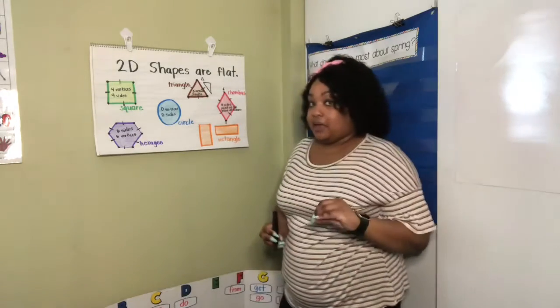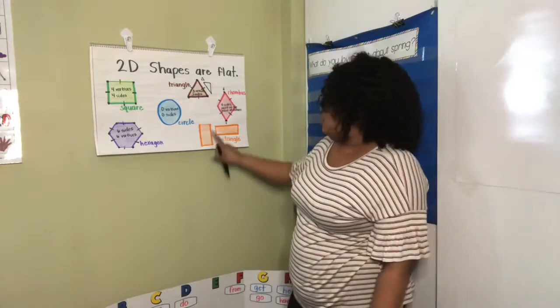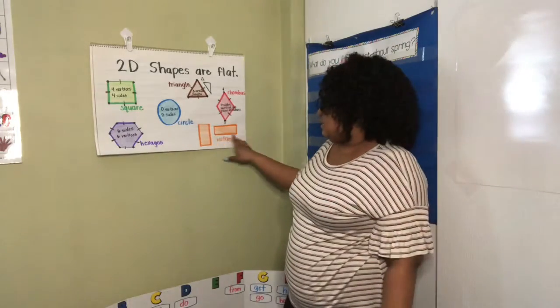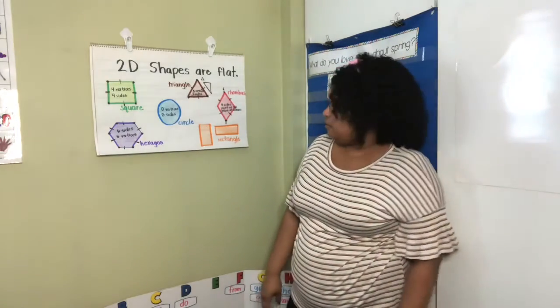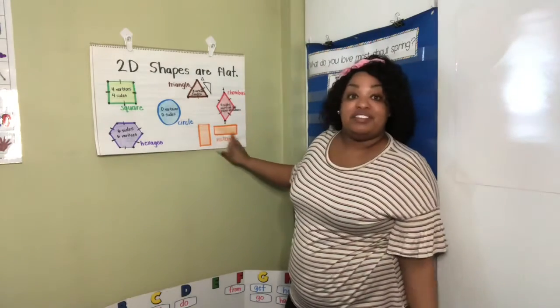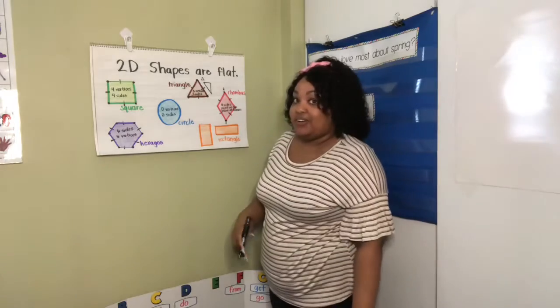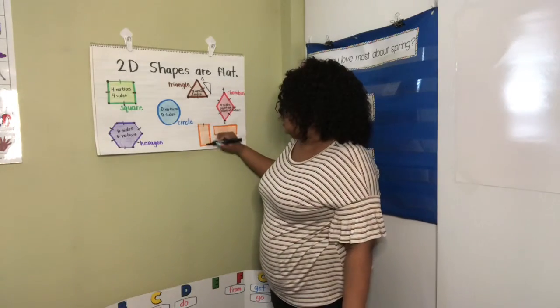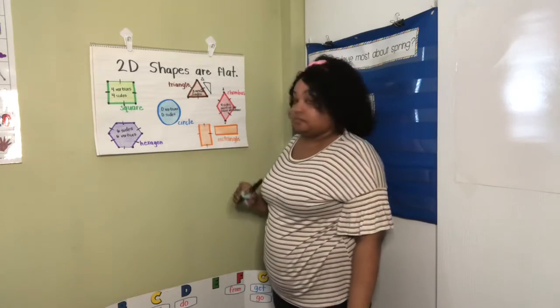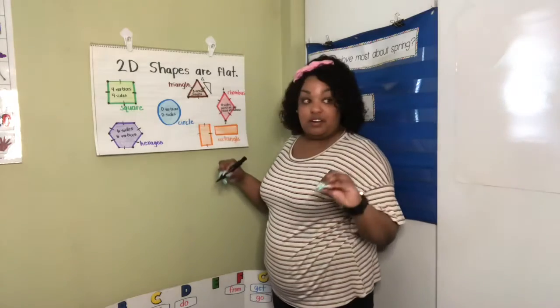Now, the last shape we're going to review is a rectangle. You might see a rectangle going from top to bottom, or you might see it on its side left to right. Regardless, if it's going up and down or left to right, it's a rectangle. A rectangle has two short sides and two long sides.